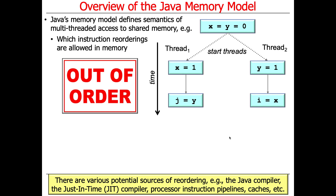For sequential programs, it doesn't really matter as long as the appearance to you is that everything ran in the order shown in the program. You don't really care about the actual order of the instructions as long as you get the effective result. However, this causes chaos for concurrent programs without synchronization. The Java memory model defines these semantics to maximize performance on modern processors while making sure you can enforce ordering when you need to.